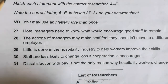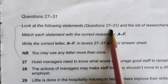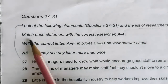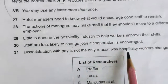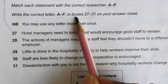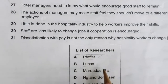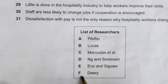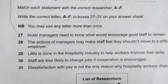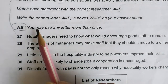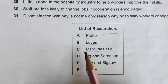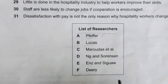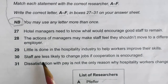Always read the instructions first. These instructions say: look at the following statements, questions 27 to 31, and the list of researchers below. Match each statement with the correct researcher A to F, and write the correct letter in boxes 27 to 31 on the answer sheet. You don't write the researcher's name — just the letter A, B, C, D, E, or F. One important note: you may use any letter more than once, which means one researcher's name will definitely appear as an answer twice.